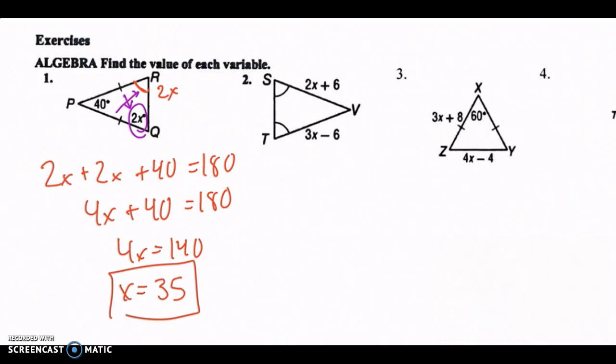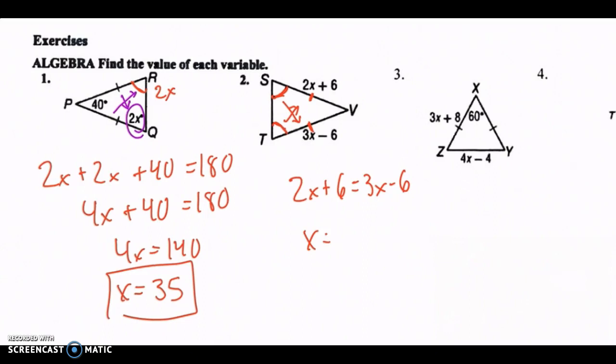For here, these two angles are congruent, right? So initially we don't know that the sides are congruent yet. But since these two angles are congruent, then we know its opposite sides are congruent. So then we can set them equal to each other. Boom, boom, boom. So it's going to be x equals 12. Easy.